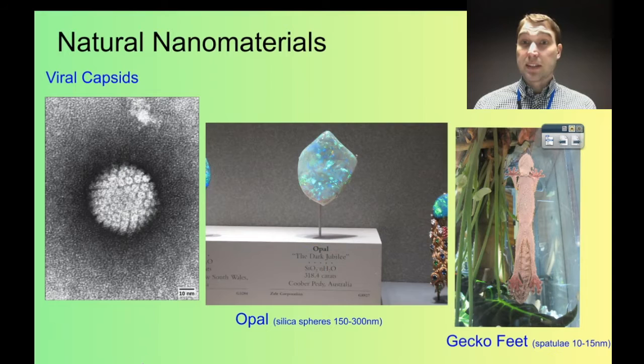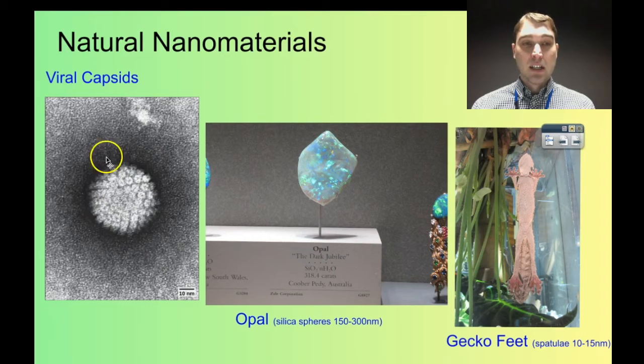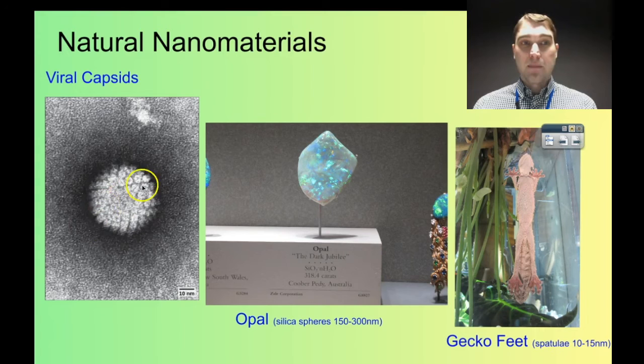Nanomaterials exist in nature. Here are some pictures of some things that contain nanomaterials. This is a virus. We can see the scale down here — 10 nanometers. The capsid, which is the outside of the virus, is what attaches to the cell and then injects the DNA or RNA. We can measure this and see that it's at that nanoscale, between 1 and 100 nanometers across.